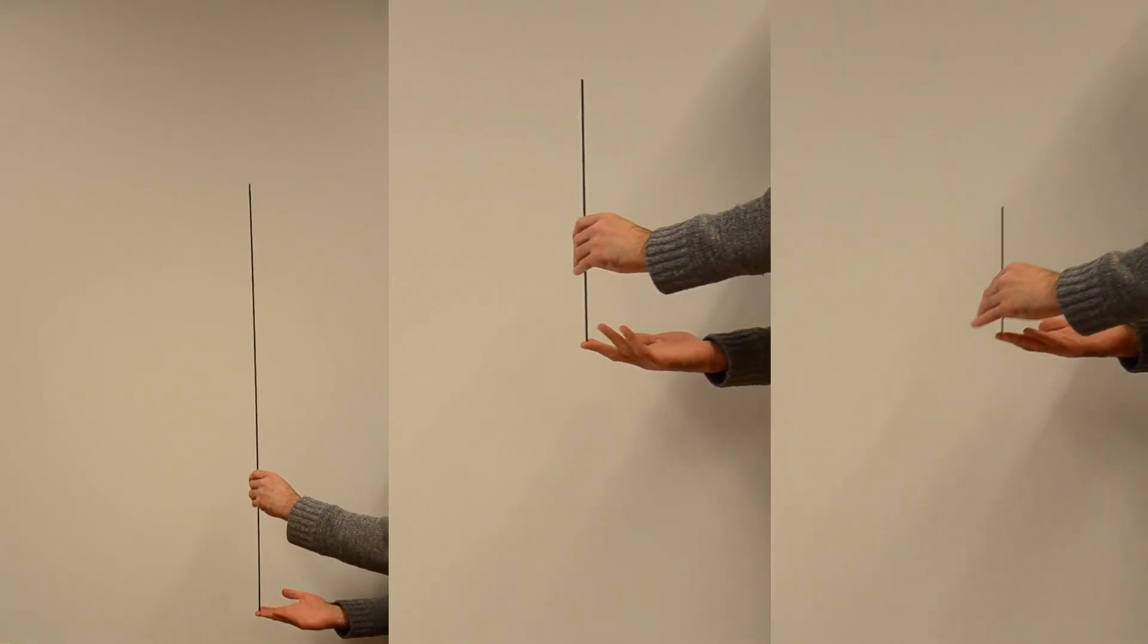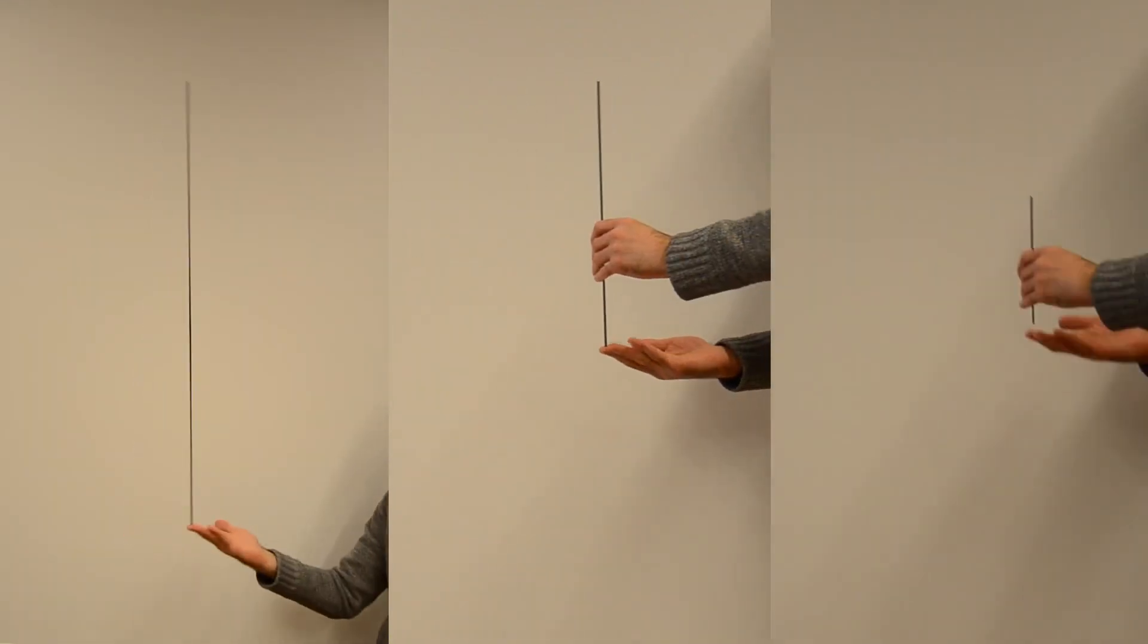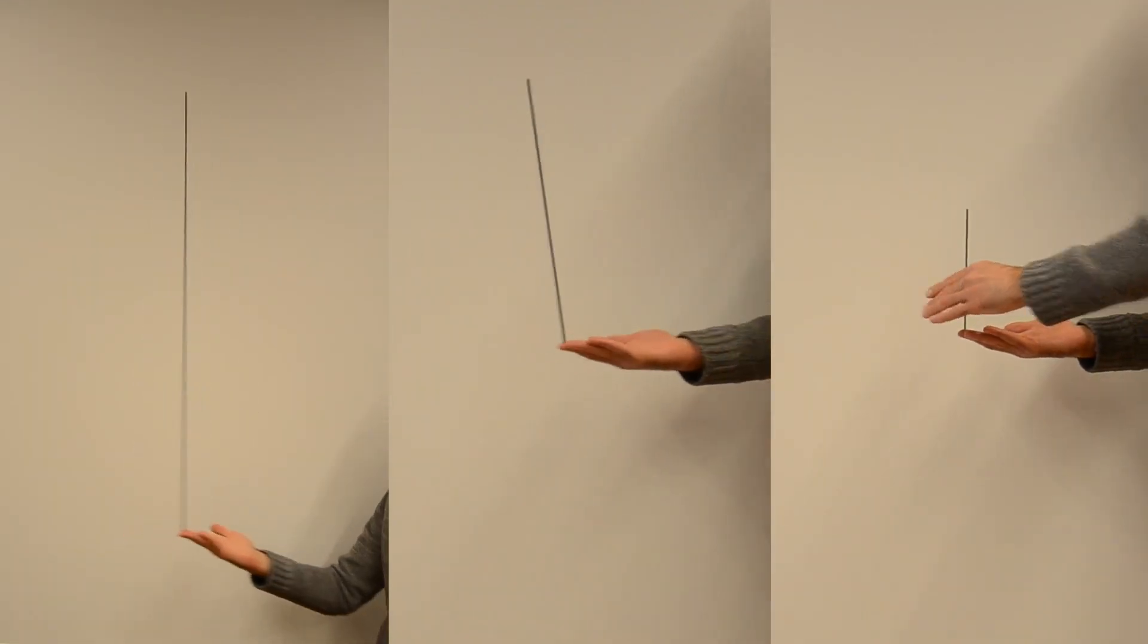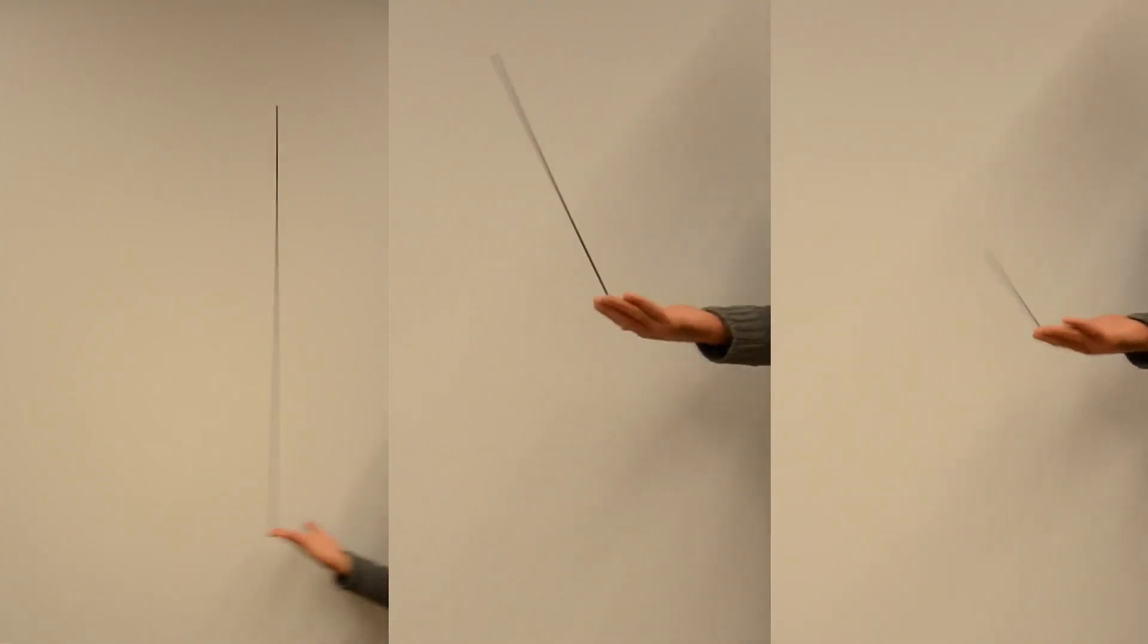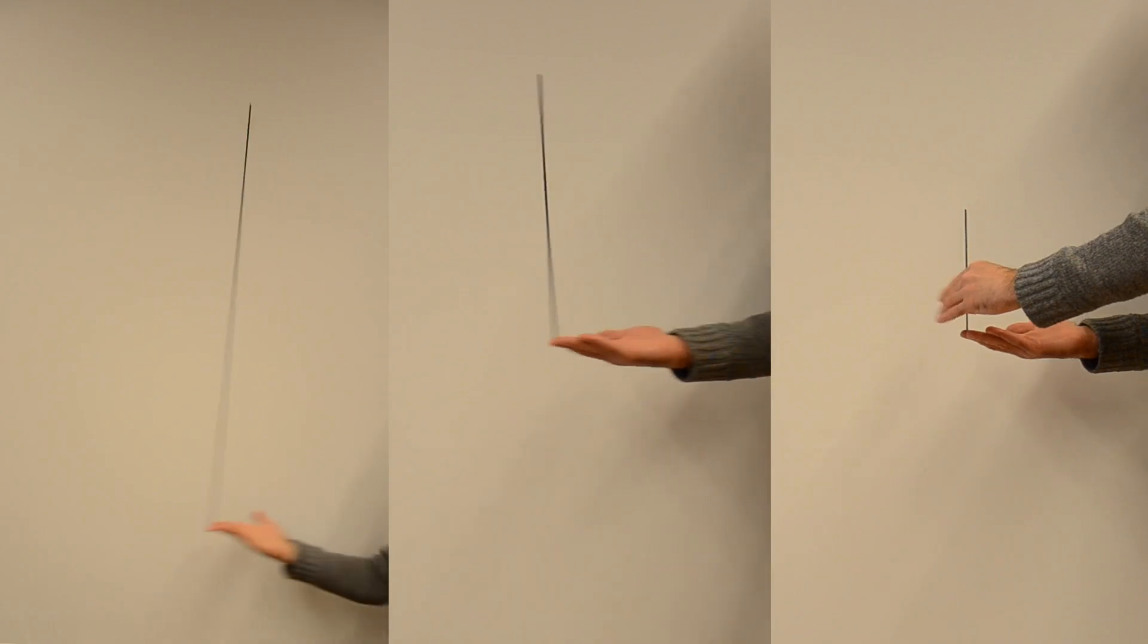To understand the complexity and challenge of controlling an inverted pendulum, consider the analogy of trying to balance a long pole on the tip of your finger. You can notice that the shorter the pendulum, the more challenging it becomes to balance.